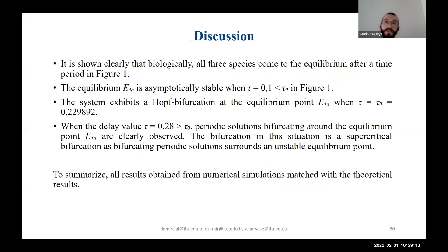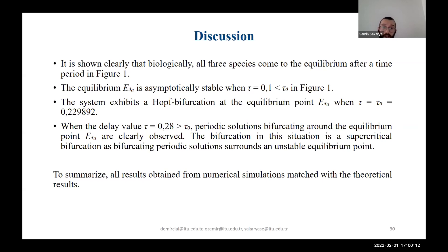In the discussion of numerical simulations: all three species come to the equilibrium point after some time in figure one, and E3a is an asymptotically stable equilibrium point when tau is less than the critical tau value. In figure two, the dynamical system exhibits a Hopf bifurcation at E3a when tau equals the critical tau value tau zero. For greater tau values, the system shows periodic solutions bifurcating around E3a — this is a supercritical bifurcation, as the bifurcating periodic solutions surround an unstable equilibrium point. All numerical simulation results matched with the theoretical findings.